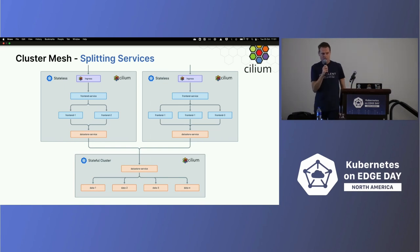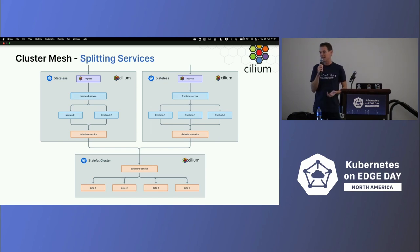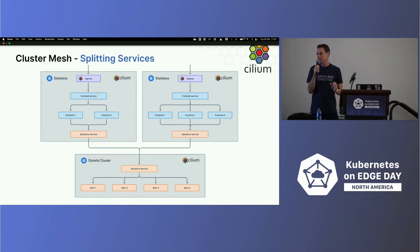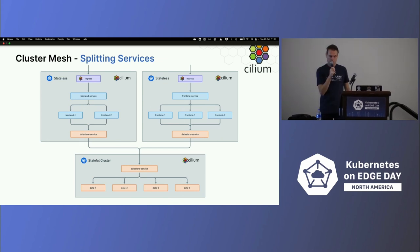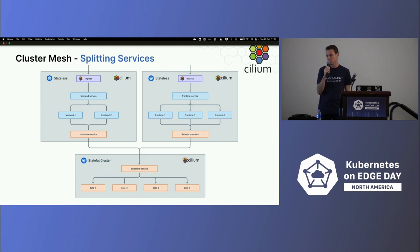Another use case is splitting services — stateful versus stateless. Similar to shared services, in this case you have a centralized cluster where you want to store data and maintain state, but you want to keep your edge or remote clusters nimble, agile, and small so you can lifecycle them more easily. The same principle applies: exposing a data store service as a global service, and exposing that service across clusters for them to connect and be routed to that centralized cluster.